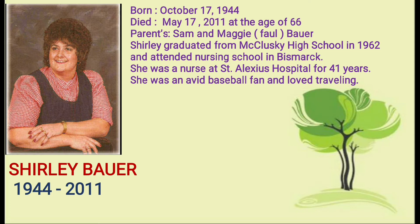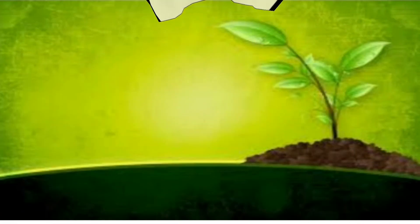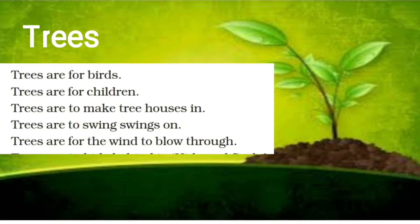That was a little bit of information about poet Shirley Bird. Now let's look at the poem Trees, which we are going to explain today. Listen very carefully: Trees are for birds. Trees are for children. Trees are to make tree houses in.